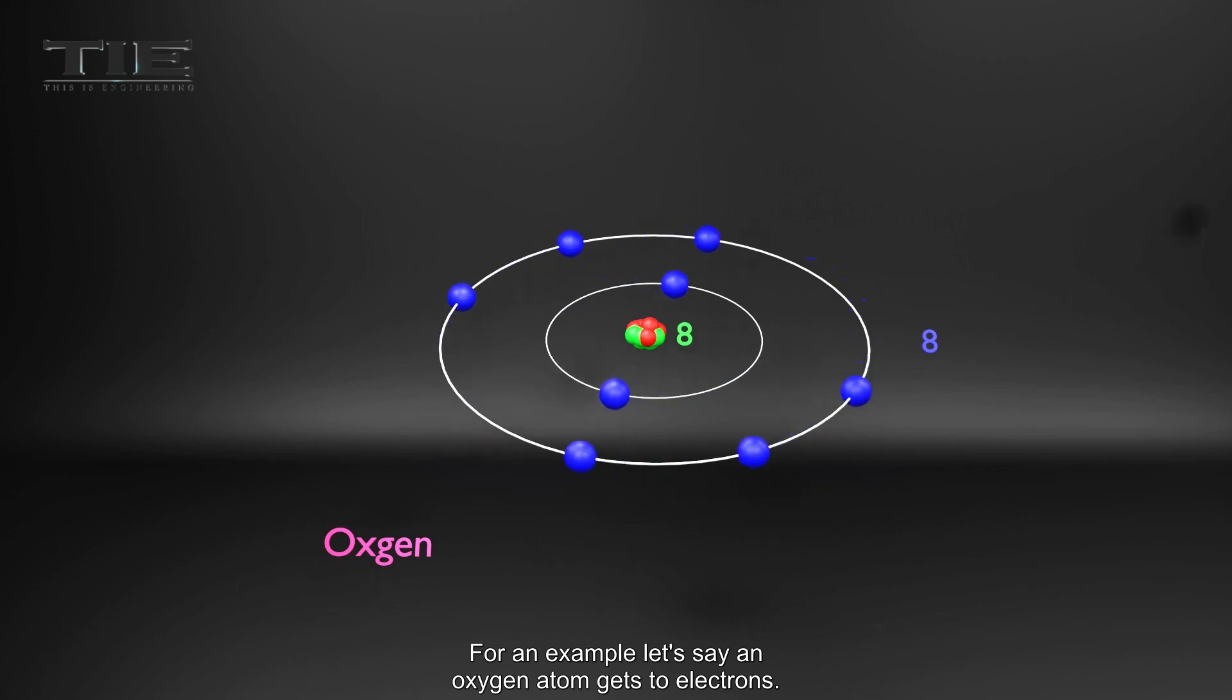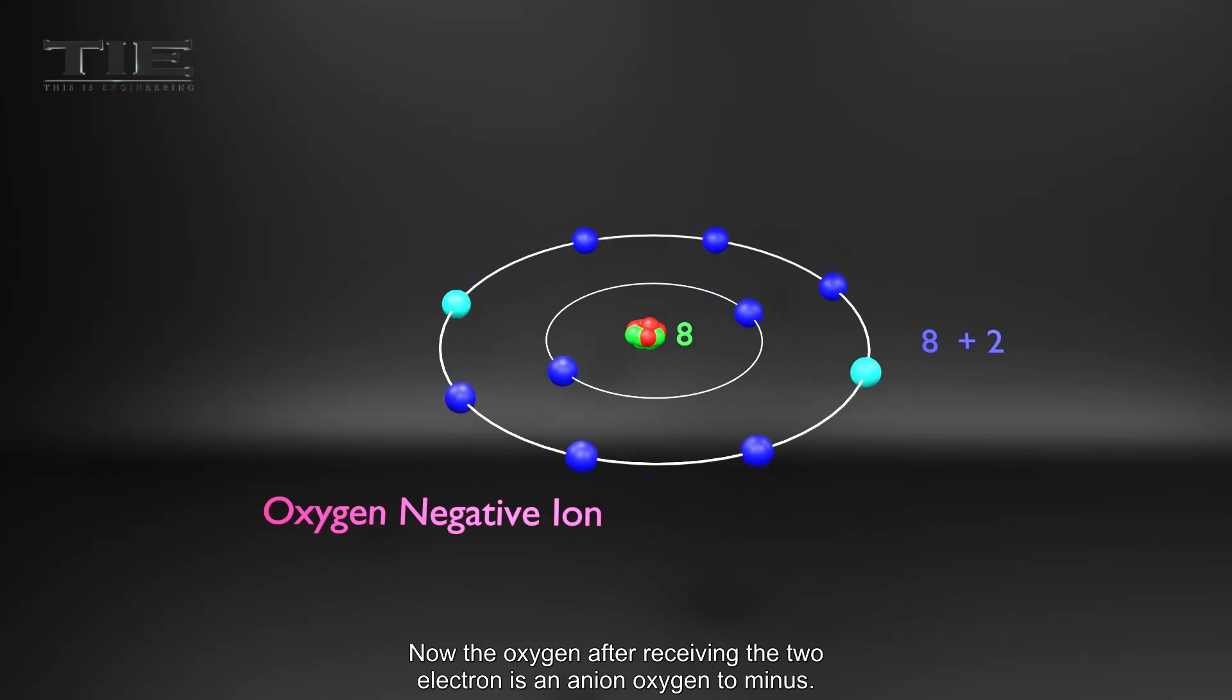For an example, let's say an oxygen atom gets 2 electrons. Now the oxygen after receiving the 2 electrons is an anion, oxygen 2 minus.